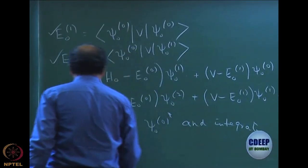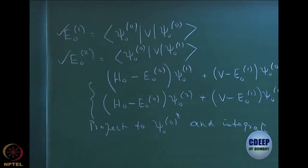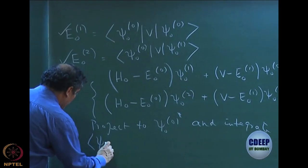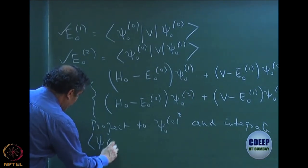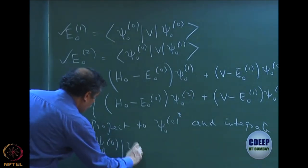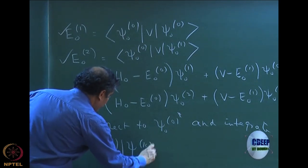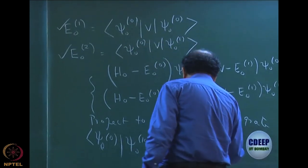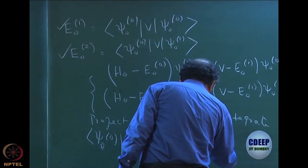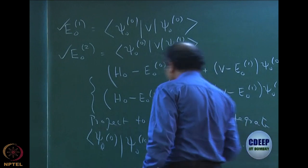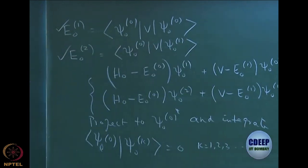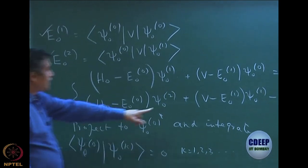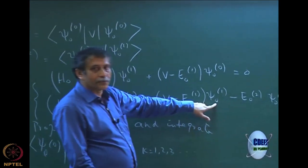These two equations were obtained by projection: you project these equations onto ψ00 star and integrate. We are also explicitly working with intermediate normalization, which means all ground state corrections are orthogonal to the zeroth order state for all k = 1, 2, 3, etc. That is why the term ψ00 ψ01 becomes zero.